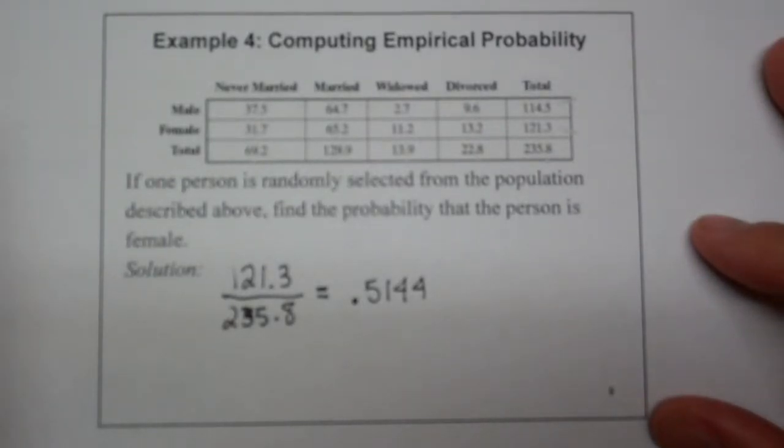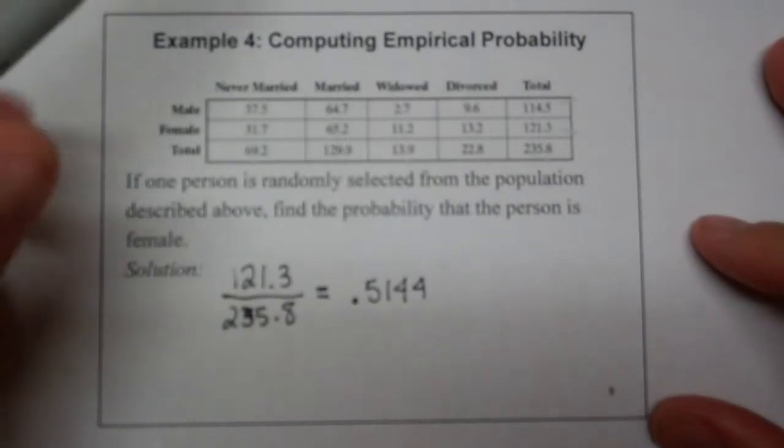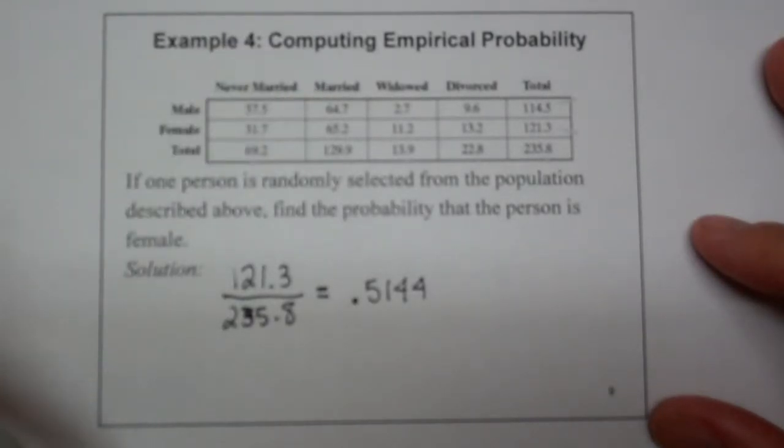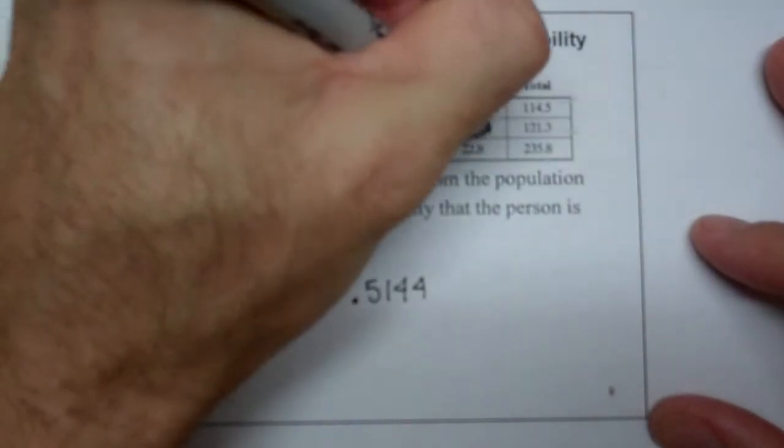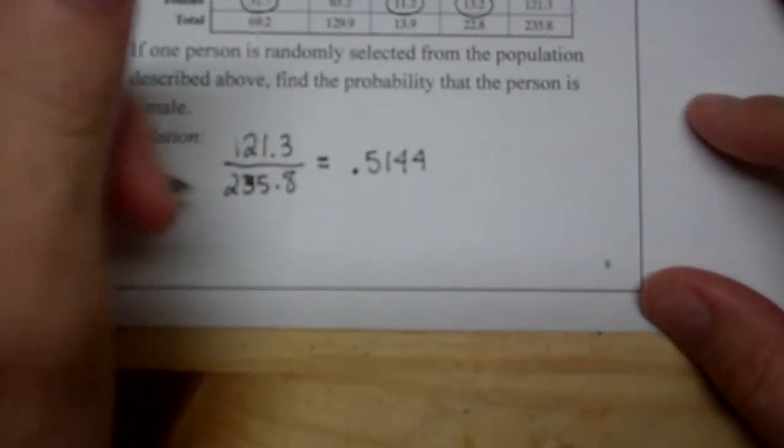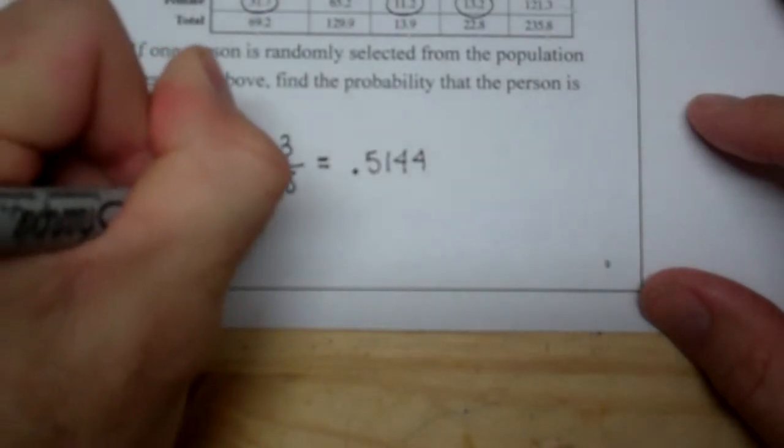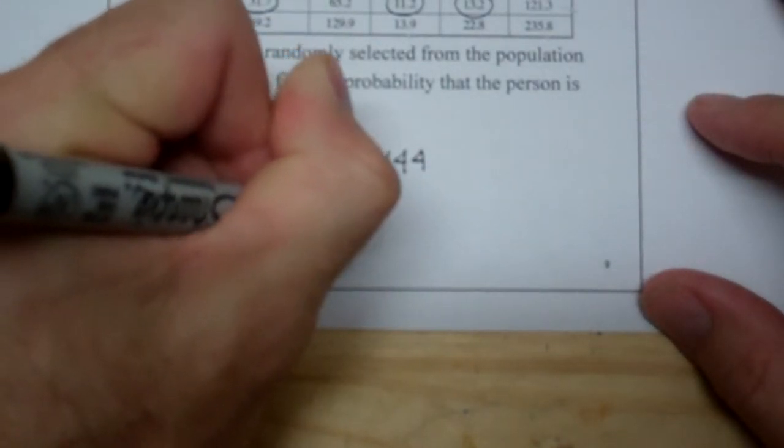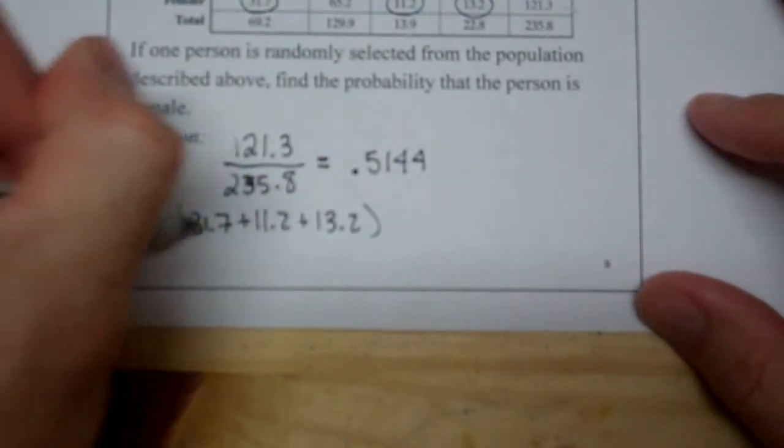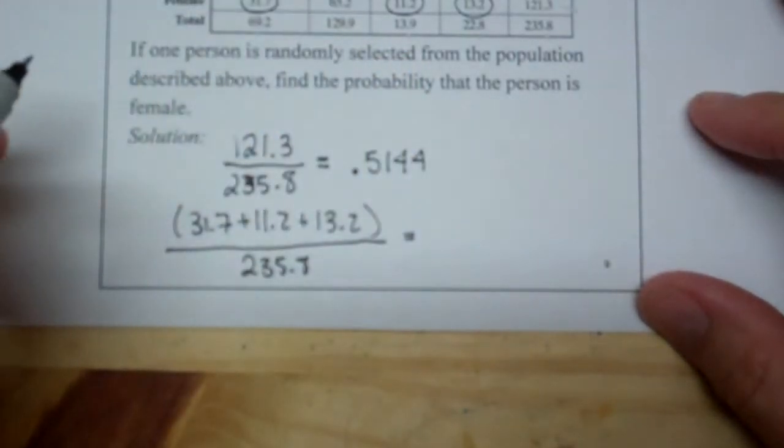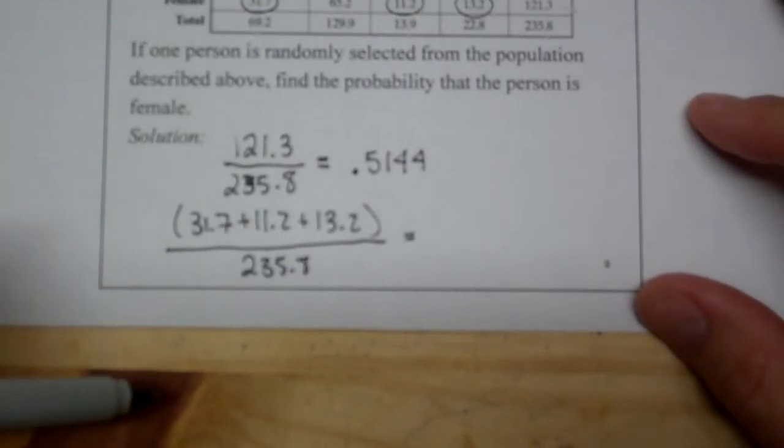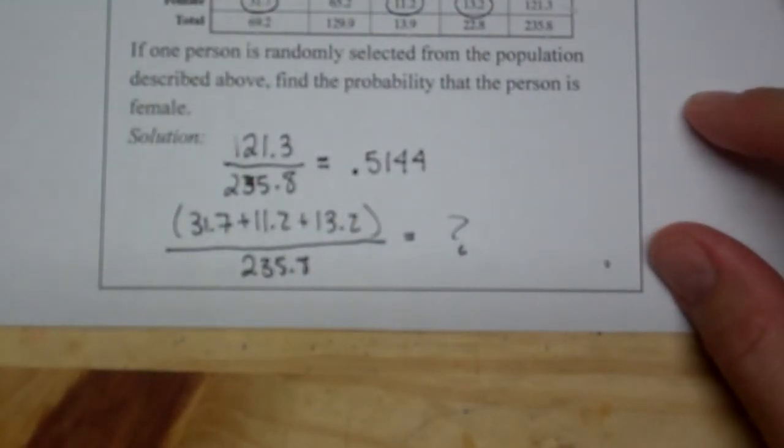Now, if you wanted to actually find one that was not married, what you would do is you would take the never married, widowed, and divorced. And you would add those up, 31.7 plus 11.2 plus 13.2. So those are all the single ladies out of the 235.8. And that will tell you the likelihood of running into a single lady when you go out on a Friday night, which happens to be when I am taping this. And that, I will leave up to you to figure out.